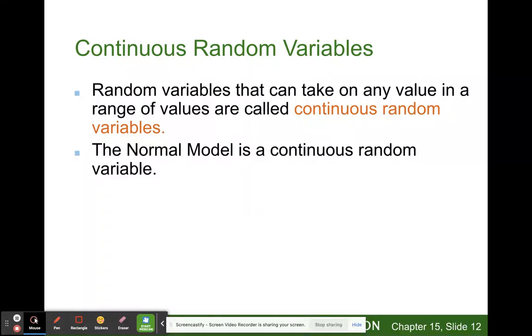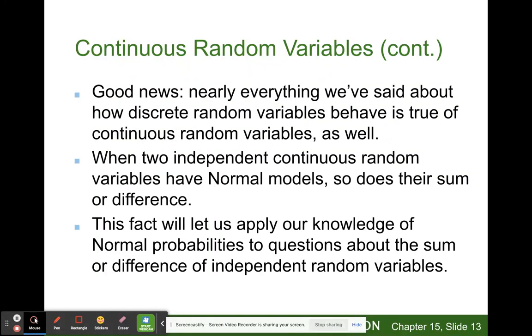Random variables that can take on any value in a range of values are called continuous random variables. The normal model is a continuous random variable. Nearly everything we've said about how discrete random variables behave is true of continuous random variables. When two independent continuous random variables have normal models, so do their sum or difference. This fact will let us apply our knowledge of normal probabilities to questions about the sum or difference of independent random variables.